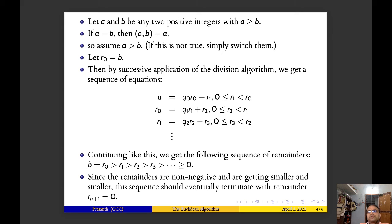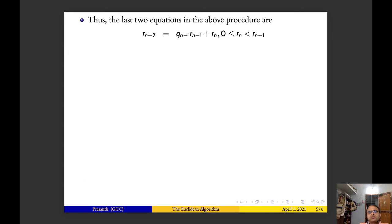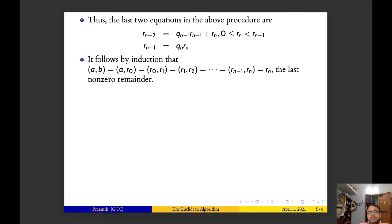Now you take the last two equations: one is r_{n-2} equals q_{n-1}r_{n-1} plus r_n, and r_{n-1} equals q_n r_n. We can see that by the previous theorem, the gcd of a,b is same as gcd of a,r₀, that is same as gcd of r₀,r₁, that is same as gcd of r₁,r₂, and so on, that is same as gcd of r_{n-1},r_n, that is equal to r_n, the last non-zero remainder.